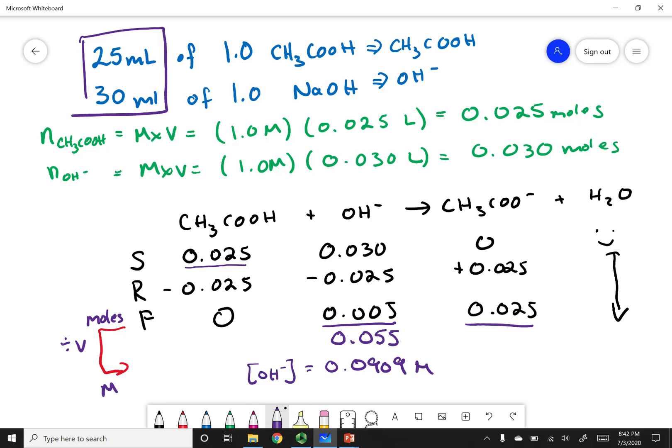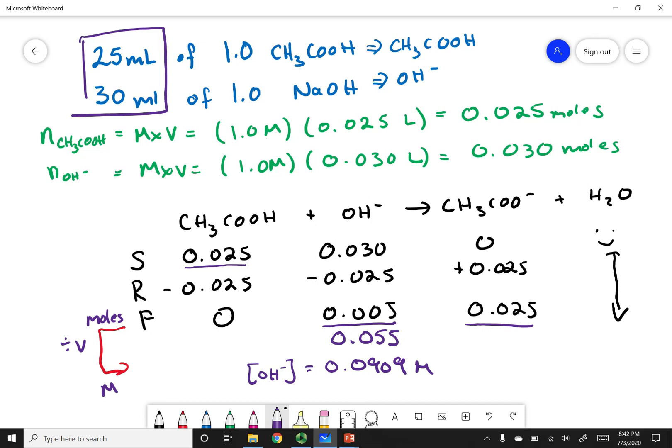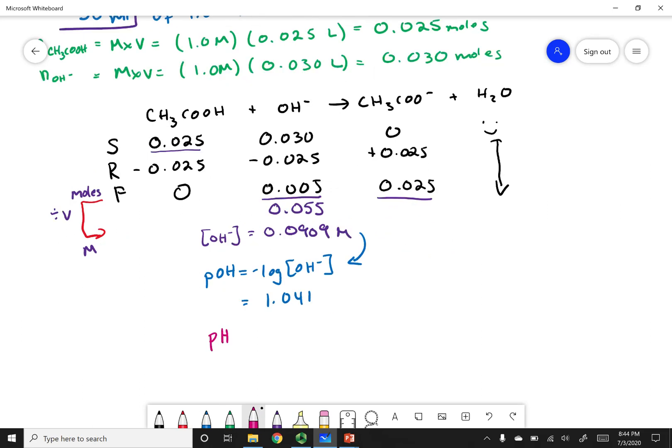So I can go straight to taking the pOH from here. So the pOH is going to equal the negative log of my OH- concentration. So I can put this value in. I get 1.041 as my pOH. We know that pH equals 14 minus my pOH. So 14 minus 1.041 gets me a pH of about 12.96.